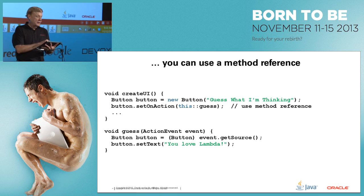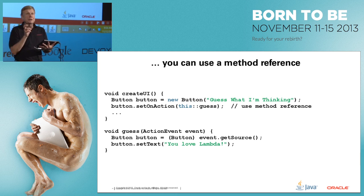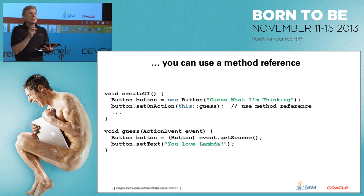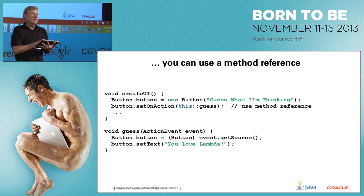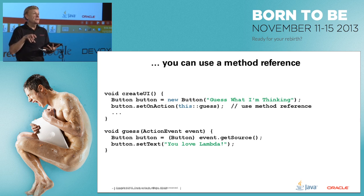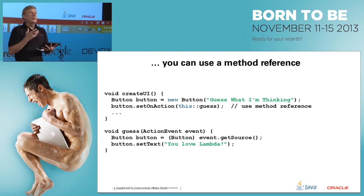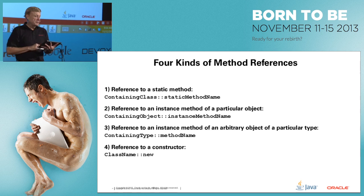In setOnAction, instead of a lambda expression that calls the method, we use a method reference — always some class or instance, double colon (::), then a method name. Here we say: on this object, call the guess method. The compiler knows what was passed to the lambda was an event object, so it calls guess with that event. You don't have to consciously repass the event — just use the method reference.